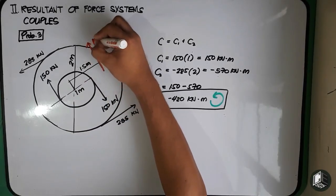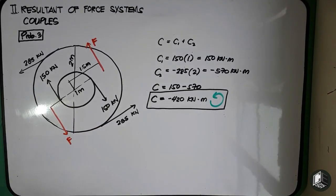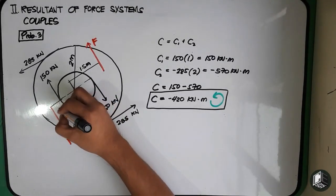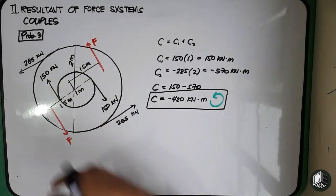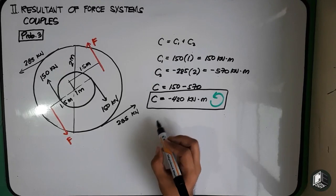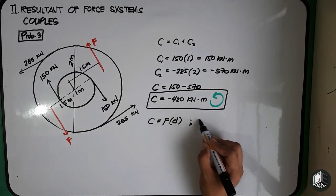This is force F and this is also force F. Now ang distance from the center is 1.5 meters, therefore yung distance d for this couple is 3.0. So C is equals to force multiplied by d...